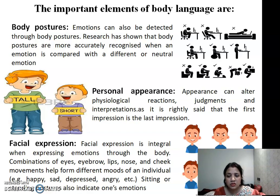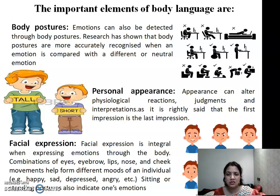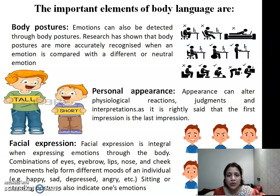Most people sit very straight with their shoulders forward, while some sit leaning to one side or resting a hand. This is basically body posture. Research has shown that body posture is more accurately recognized when an emotion is involved compared to neutral emotions. Body posture speaks your language and conveys your message.